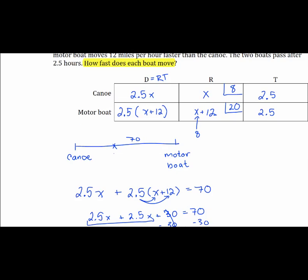So our final step is to write our answer in a readable form. The canoe goes 8 miles per hour and the motorboat goes 20 miles per hour. This is my final answer.